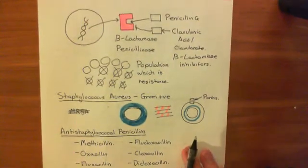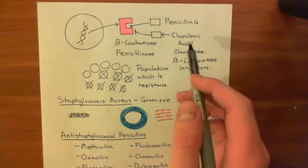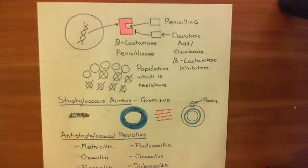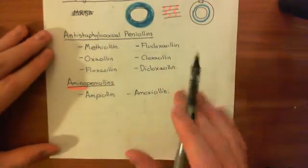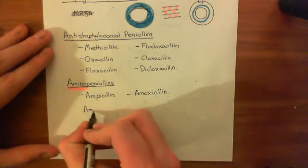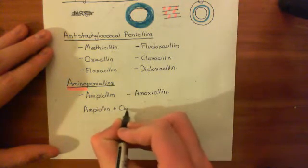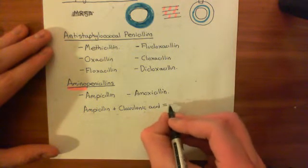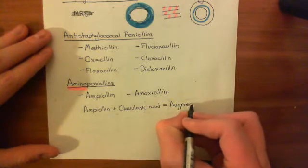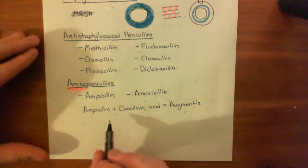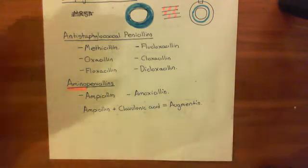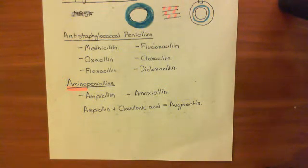For that reason, when you administer ampicillin or amoxicillin, it's very common to give clavulanic acid along with that penicillin molecule, so that if the bacterium starts to produce beta-lactamases, the clavulanic acid can inhibit them and stop the beta-lactamase from degrading your amino penicillin molecule. The combination of ampicillin with clavulanic acid is a very famous drug used a lot, known as Augmentin. When you see people being prescribed Augmentin, it means ampicillin plus clavulanic acid to prevent ampicillin being degraded by the beta-lactamase enzyme.